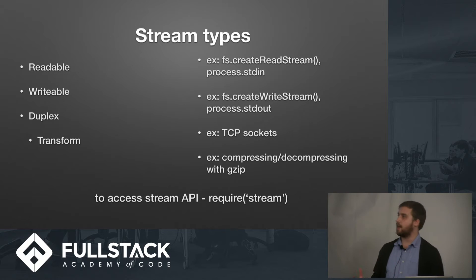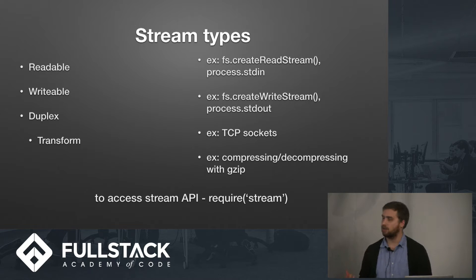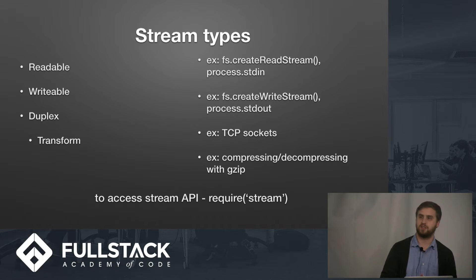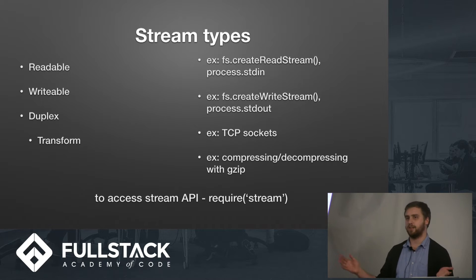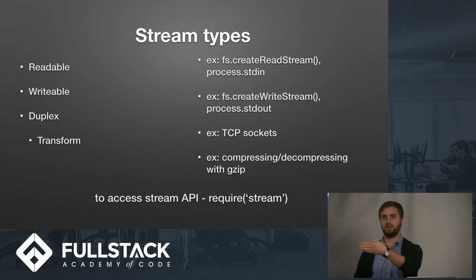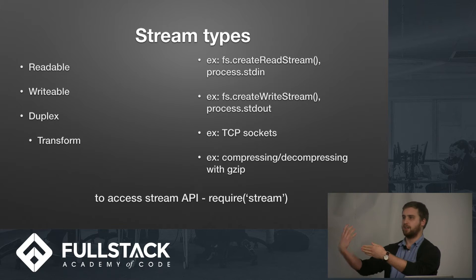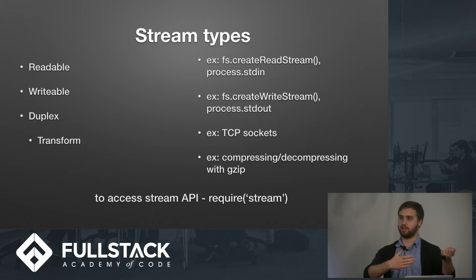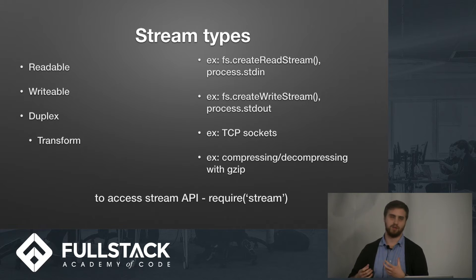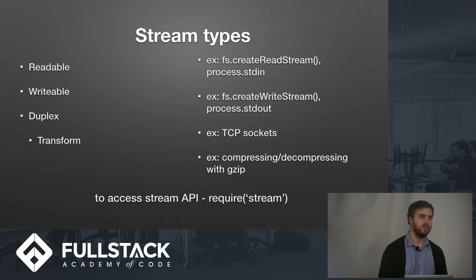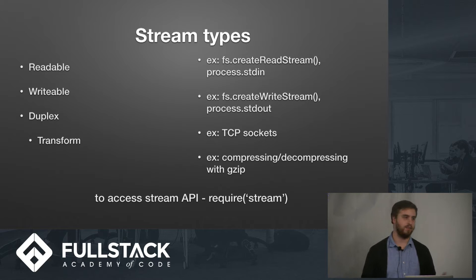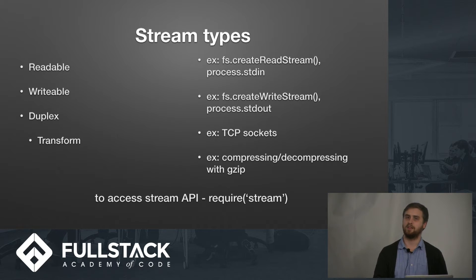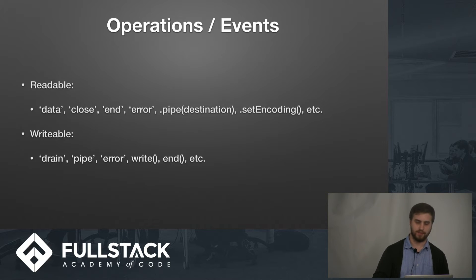We have a special case of the duplex stream called a transform stream, which is essentially a duplex stream where the readable stream can go out, some sort of transform process happens, and then the writable stream is readable by that same client. It's all happening within the same client. In Node, one of the main libraries is zlib for compressing and decompressing with gzip.